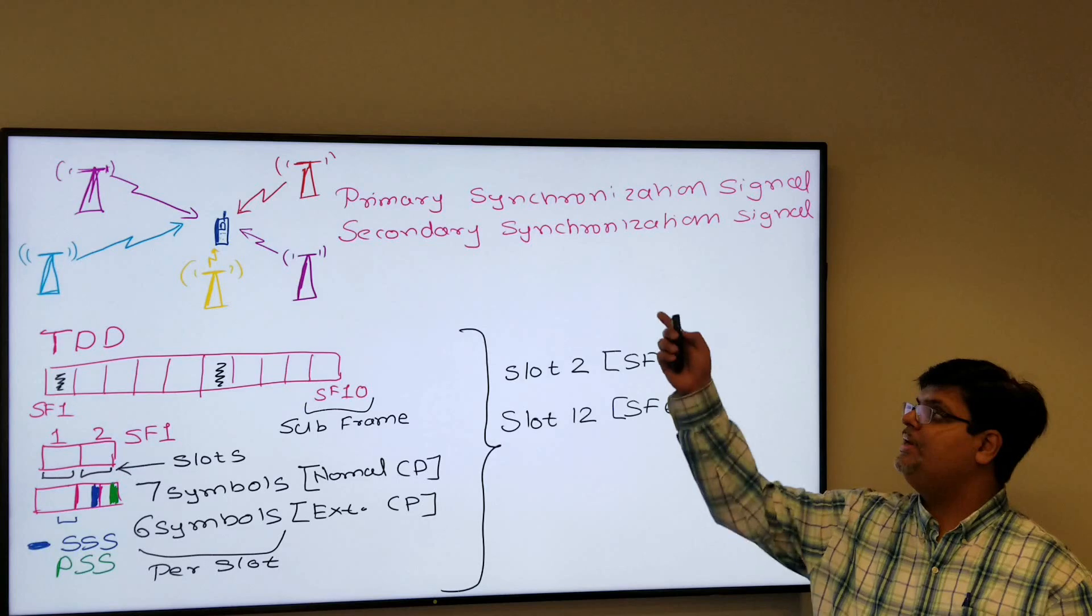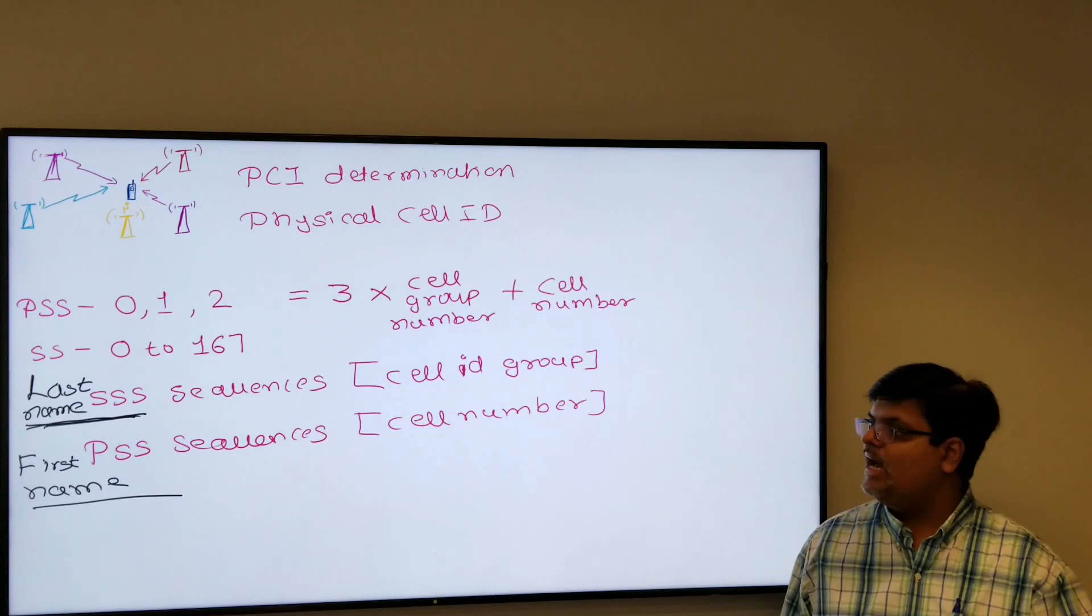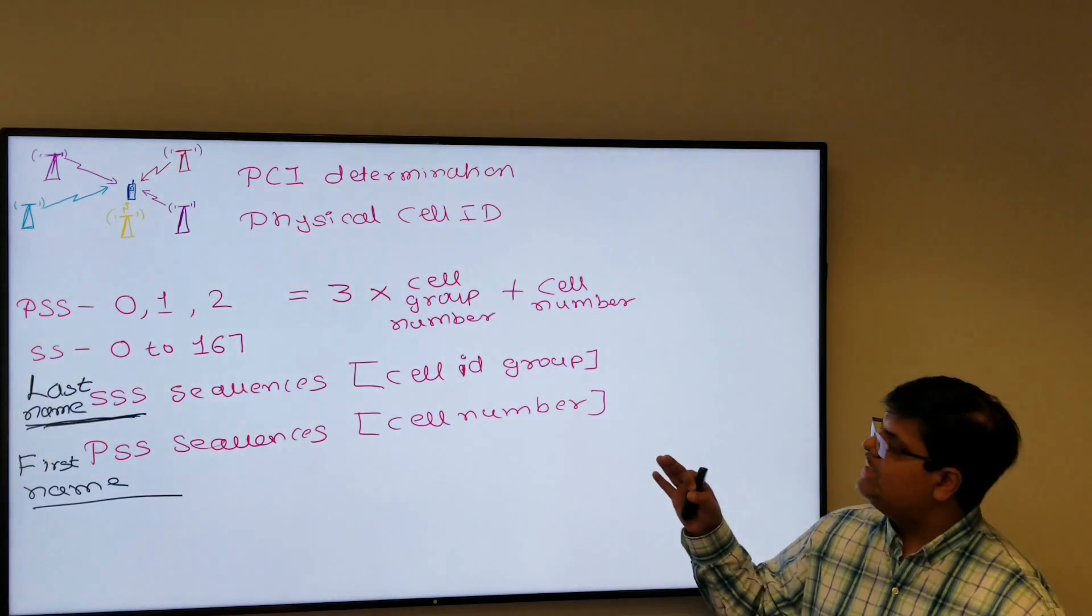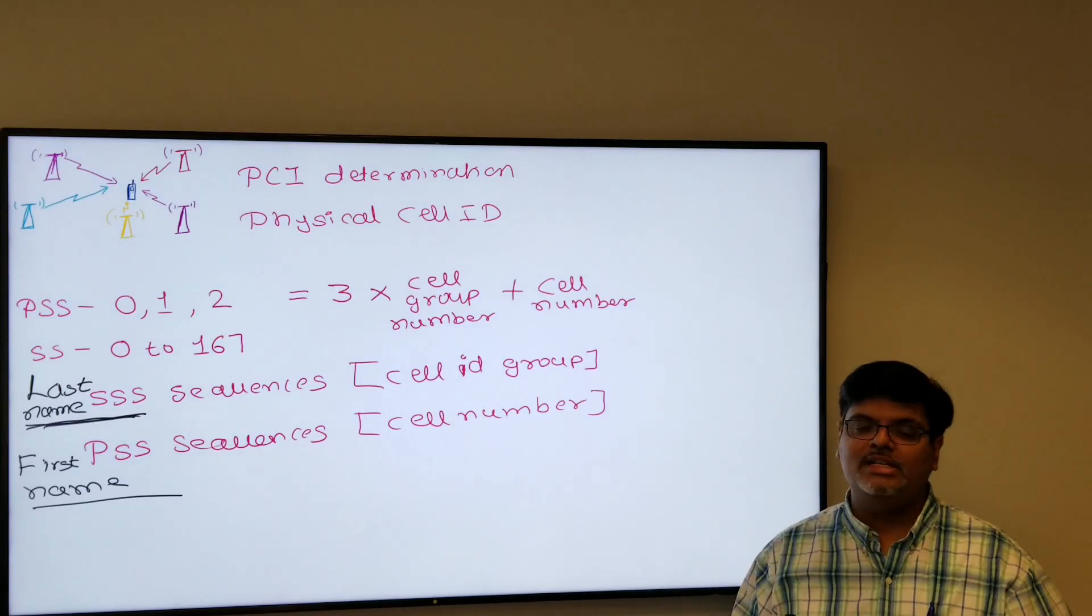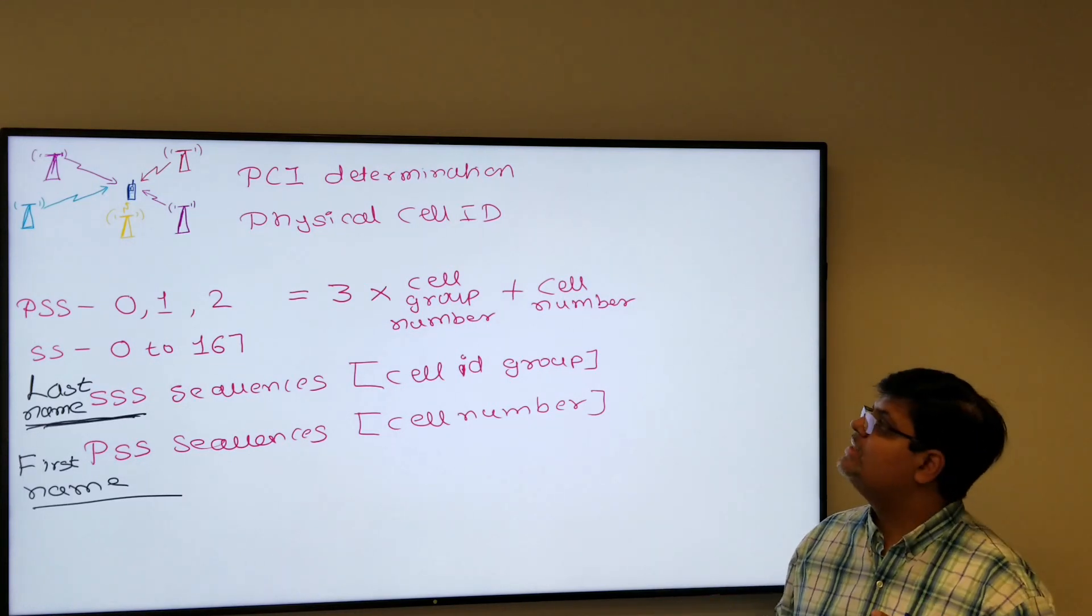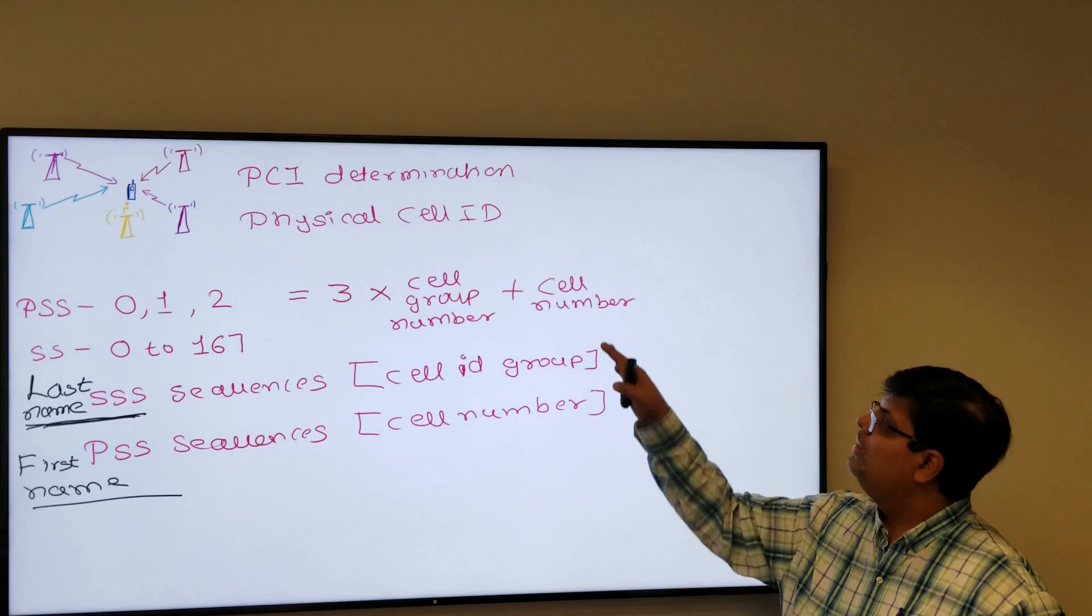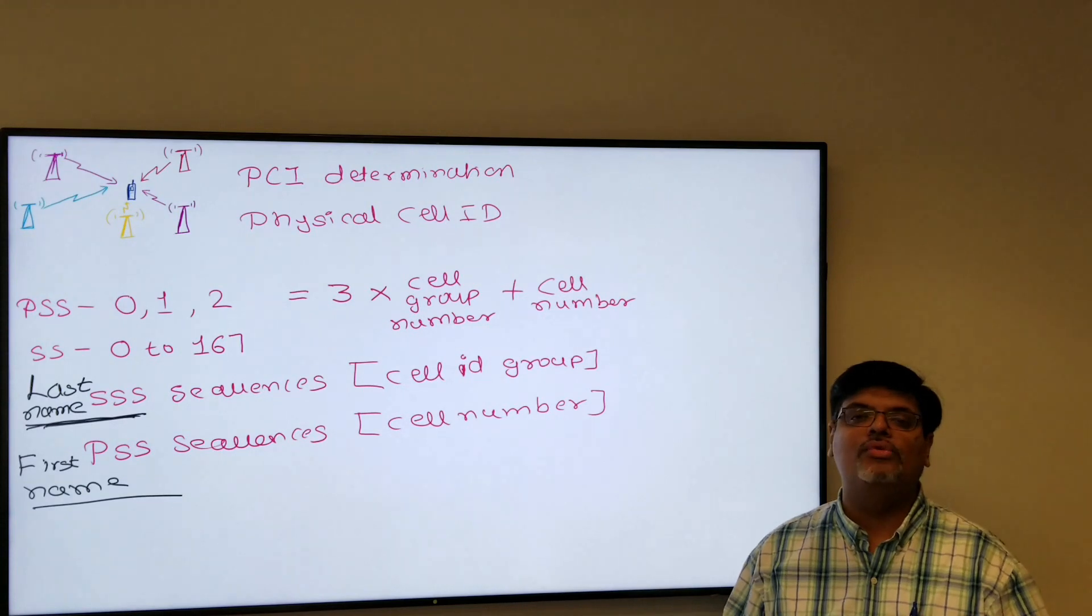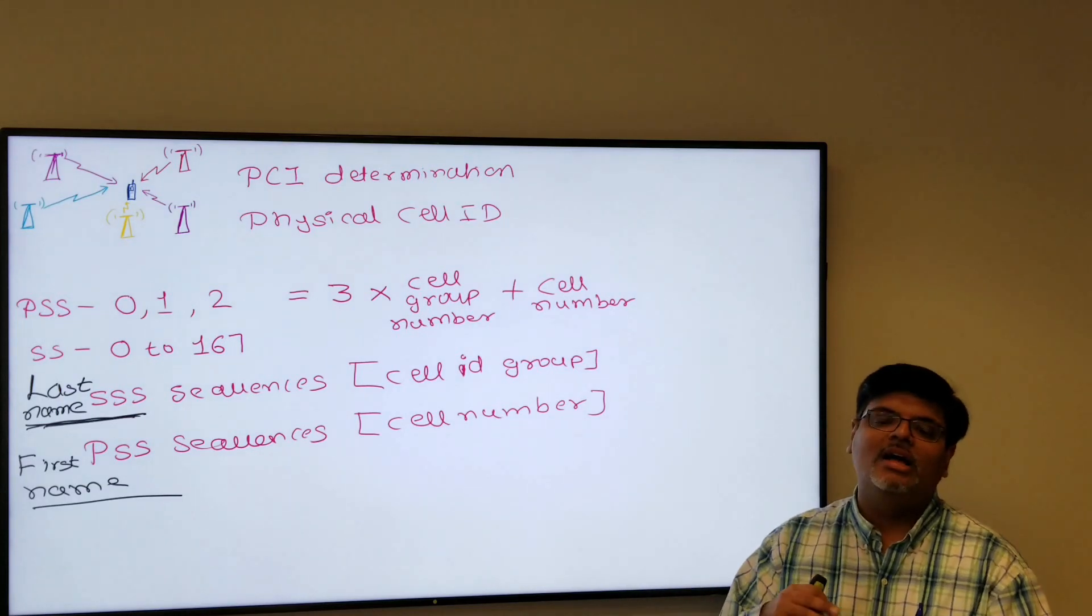Now how PSS and SSS help us to determine the PCI? PSS and SSS are nothing but pseudo random sequences. Your SSS is your cell group ID number which is between 0 to 167, whereas PSS, there are three unique cell IDs or cell numbers. From this we will derive the physical cell ID which is like the formula is three into the cell group number plus the cell number, and total number of PCI in LTE are 504. There are 504 unique PCIs.